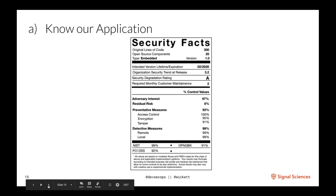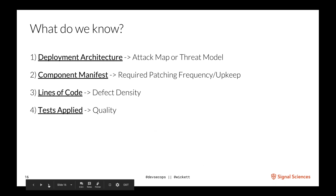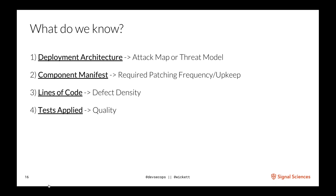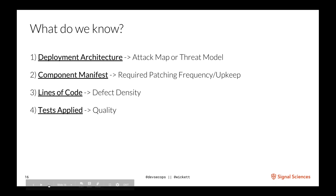What do we commonly know about our applications? We have an attack map or threat model, a component manifest like a Gemfile or Maven POM file, understanding of lines of code, and compliance or quality tests applied to code. Libraries expire but we don't treat them like they expire — people will leverage a component that's 10 years old with lots of exploitable vulnerabilities without even realizing it. That's the mindset we want to change.